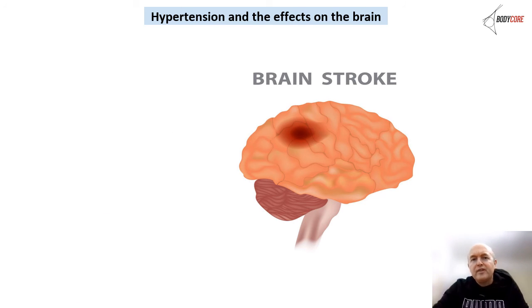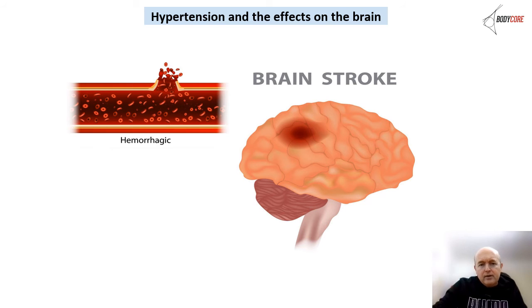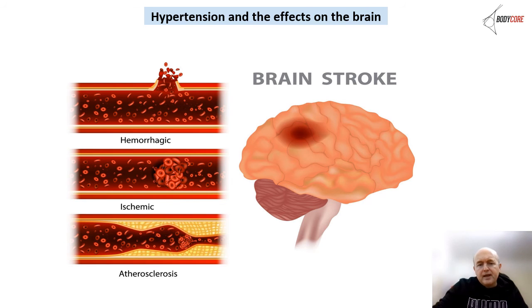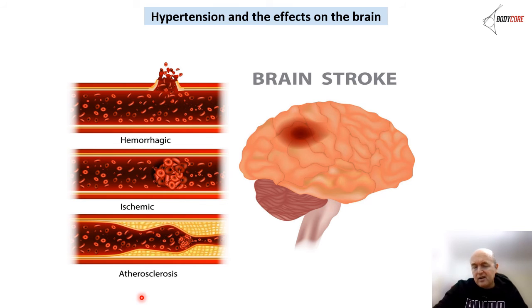Hypertension and its effects on the brain. A stroke can be caused by death of brain tissue. A haemorrhagic stroke involves a bleed to the brain. An ischaemic stroke involves a restriction of blood flow due to plaque build-up (atherosclerosis), causing a stoppage and death of brain tissue on the opposite side. A blood clot causing part of the brain to die is the most common type.